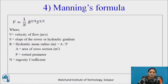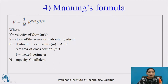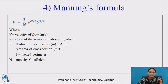Manning's formula: Manning gave the formula for velocity — V is equal to (1/N) times R to the power 2/3 times S to the power 1/2. R is the hydraulic mean radius, S is the slope of the sewer, and N is the rugosity coefficient as seen in Table 1. Refer to Table 1 for this value.